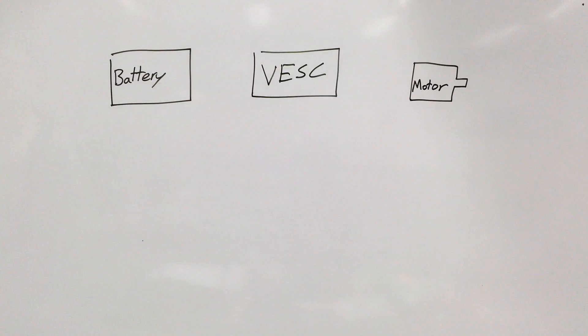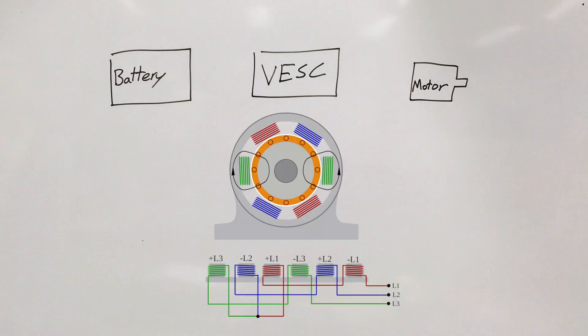And you'll see later on that I draw three lines from the VESC to the motor because there's three wires coming out from the motor. And the VESC's job is basically to send information to the motor so that it knows how fast to spin.